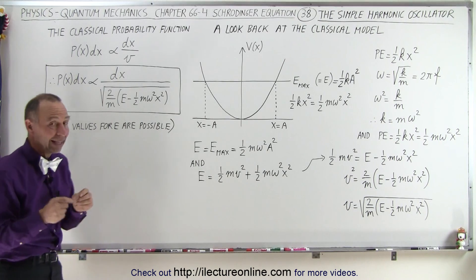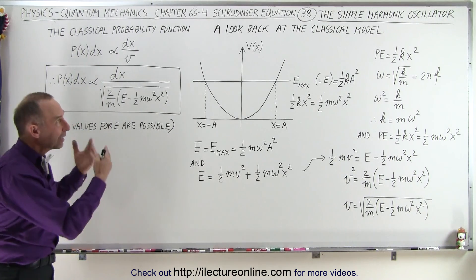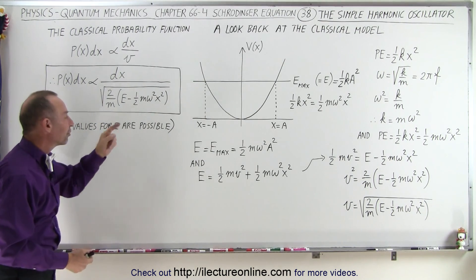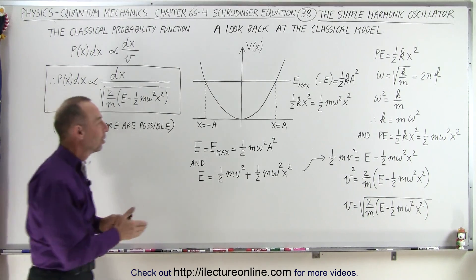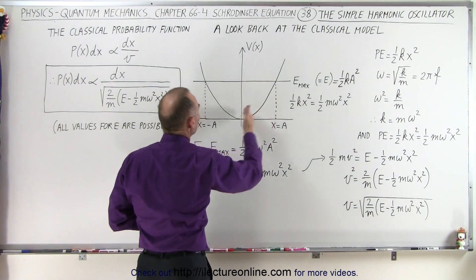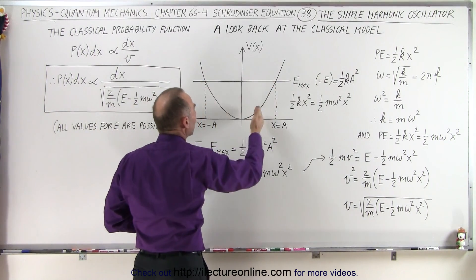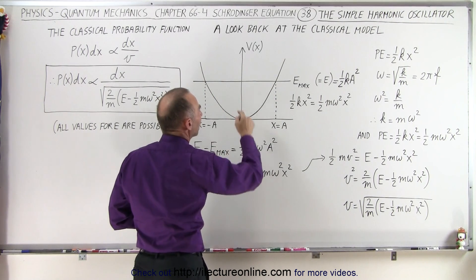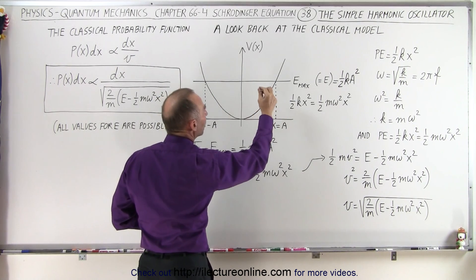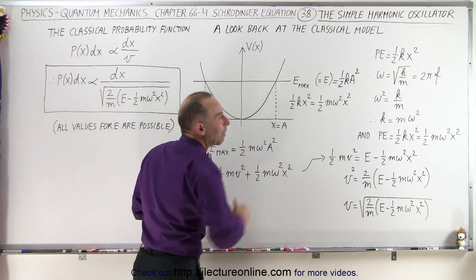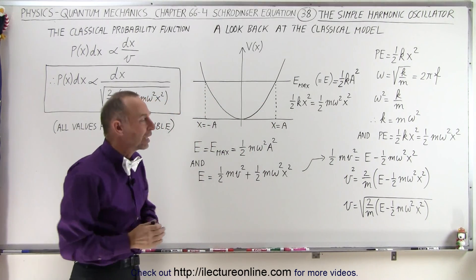Now, the difference is, and that's a really big difference, that in the classical model, all values for energy are possible. In other words, there is no potential, or there's no particular place here where we cannot find the particle, and there's no particular place where the energy is not possible. In other words, all values for the energy is possible.